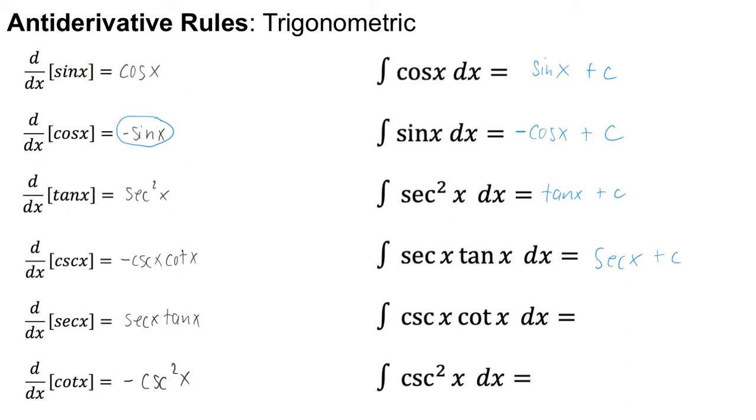Cosecant x cotangent x is, it's kind of like cosecant x, but remember here when we take the derivative of a cosecant we get a negative sign, right? So we need to make sure that we need a negative in front of the cosecant because then if I take the derivative of a negative cosecant I'll end up with the positive cosecant cotangent.